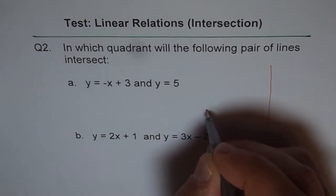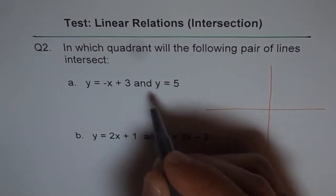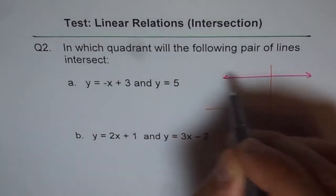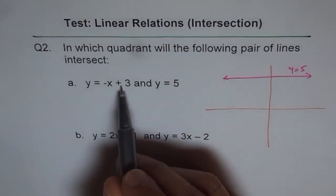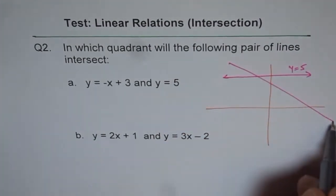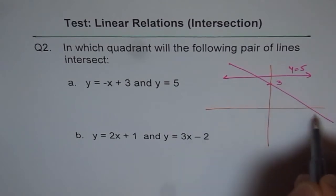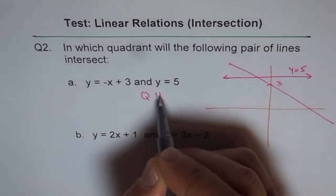So that is the answer. And here is kind of a check for this. So we will draw this in one color. So y equals to 5 is like this. That is y equals to 5. And minus x plus 3 is a line which will go like this. Where this is 3 and negative slope. You see it intersects in quadrant 2.